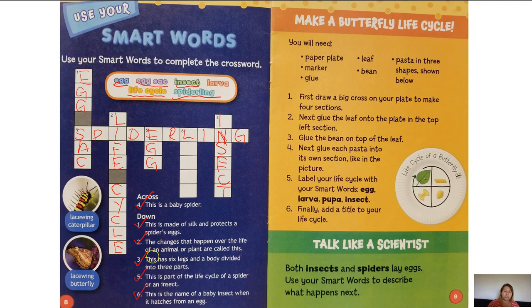The last one is number 6: this is the name of a baby insect when it hatches from an egg — that is called a larva. L-A-R-V-A.